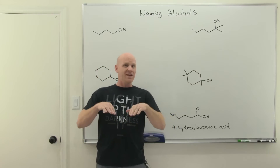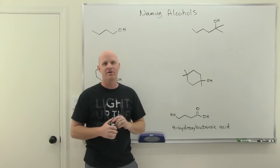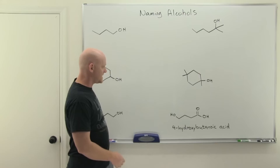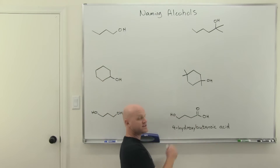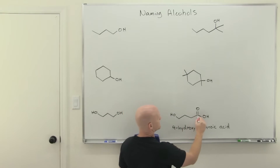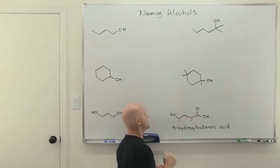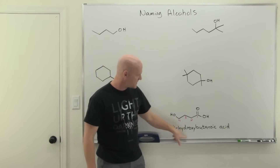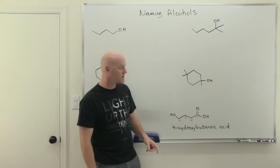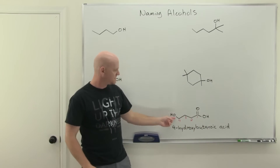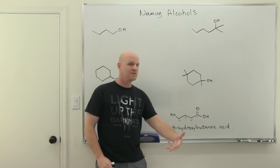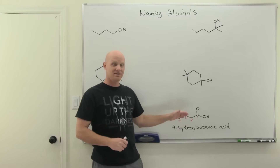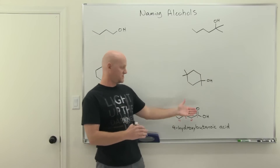So far, as we've been learning different functional groups, the alcohol is the highest priority functional group we've encountered. So the likelihood of seeing it used as a prefix is not very great yet — but here's an example to prepare you. This is 4-hydroxybutanoic acid. Carboxylic acid is the highest priority functional group, so it gets carbon number one. The hydroxyl group of the alcohol is attached to carbon four. When the alcohol is not the highest priority group, you name it as a substituent — 'hydroxy' — at the beginning of the name, giving us 4-hydroxybutanoic acid.